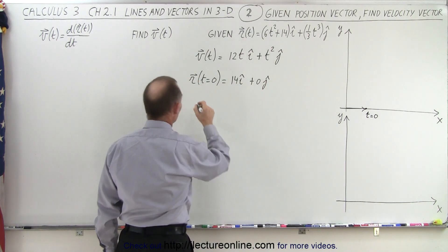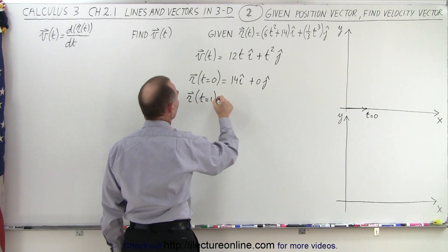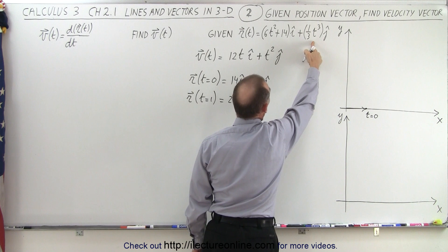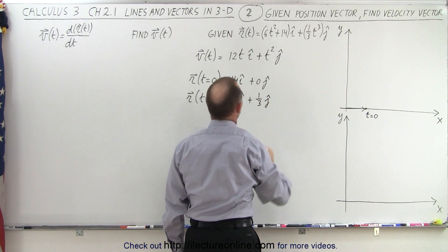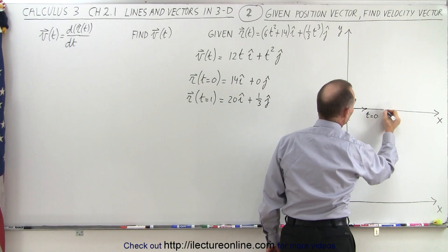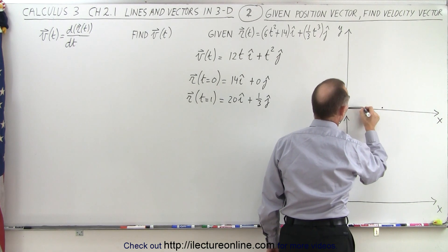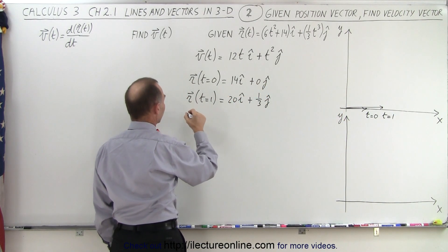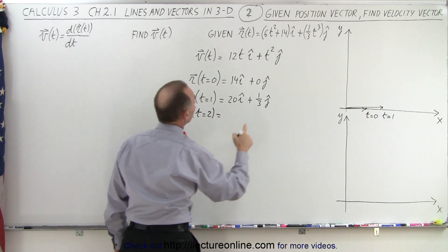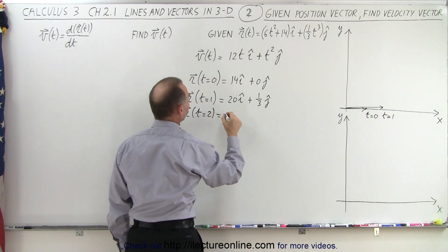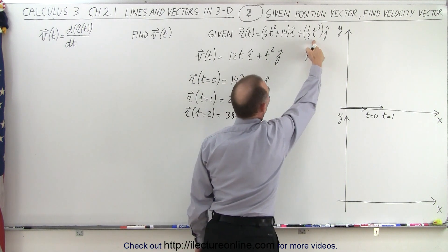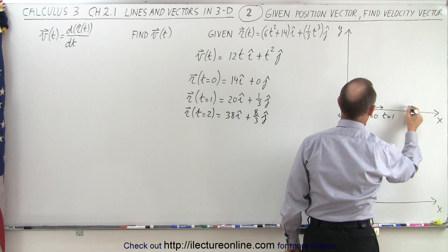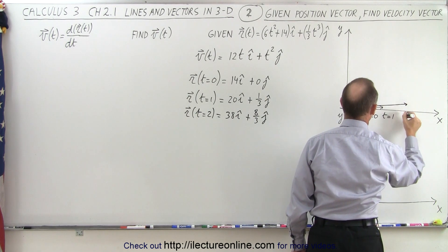When t equals 1, we plug into the position vector and get 6 plus 14, which is 20i, plus one-third j. So our next point is 20 units in the x direction and just a very small distance in the y direction — that's our new position vector at t equals 1. For t equals 2, that gives us 38i plus 8/3 j, so we're much further out and a little bit further up.